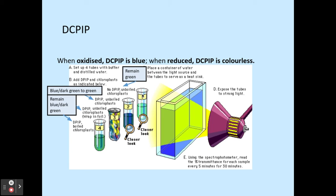In the first tube, this is the control — no DCPIP, chloroplasts undergoing photosynthesis as usual — allowing comparison to see if what has been changed has made a difference. There is no colour change. In the second boiling tube, I have DCPIP and unboiled chloroplasts undergoing photosynthesis. The hydrogen ions and electrons, instead of going to NADP, go to the DCPIP, which turns colourless and the solution goes green.